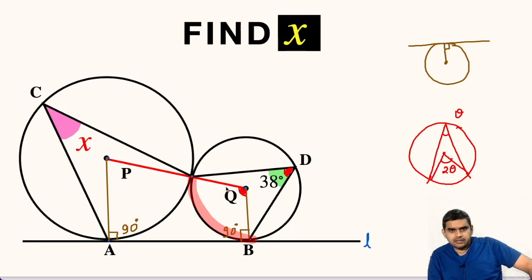So, this angle PQB will be equal to 2 times 38 degrees, that is 76 degrees.